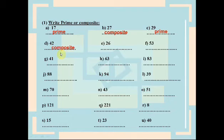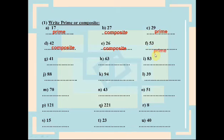42 is a composite number. 26 is also an even number, so it is a composite number. 53 is prime — not divisible by any number except itself and 1, so it has only two factors. 41 is also prime.